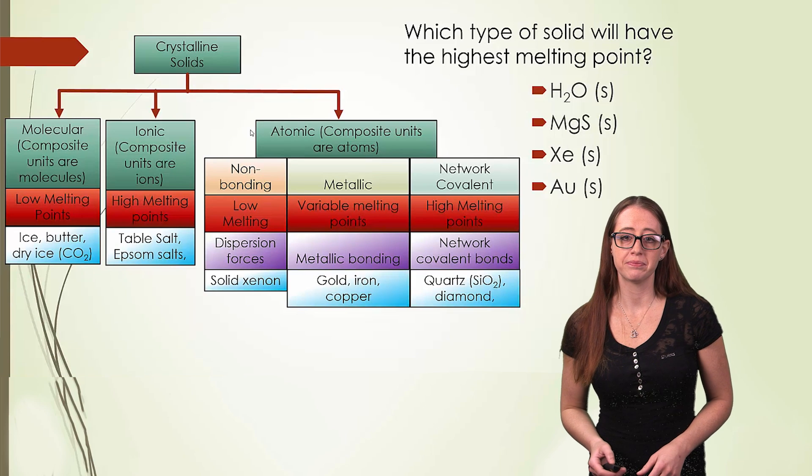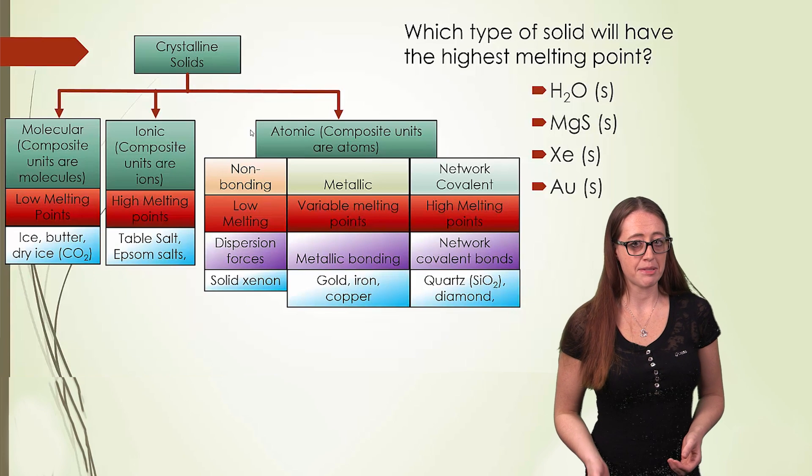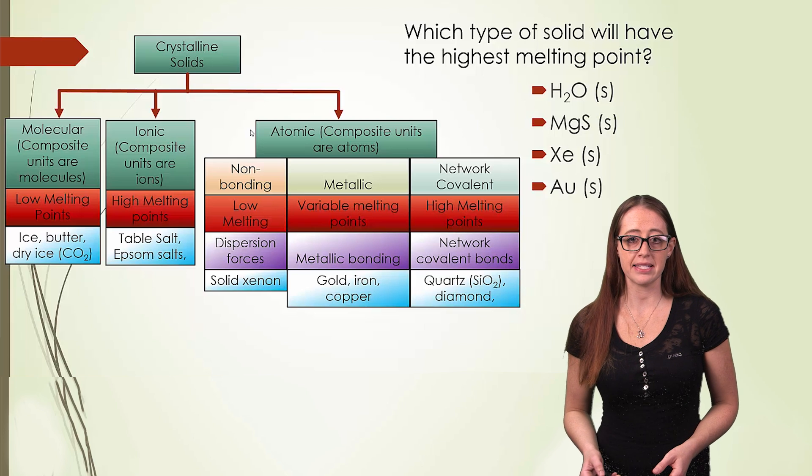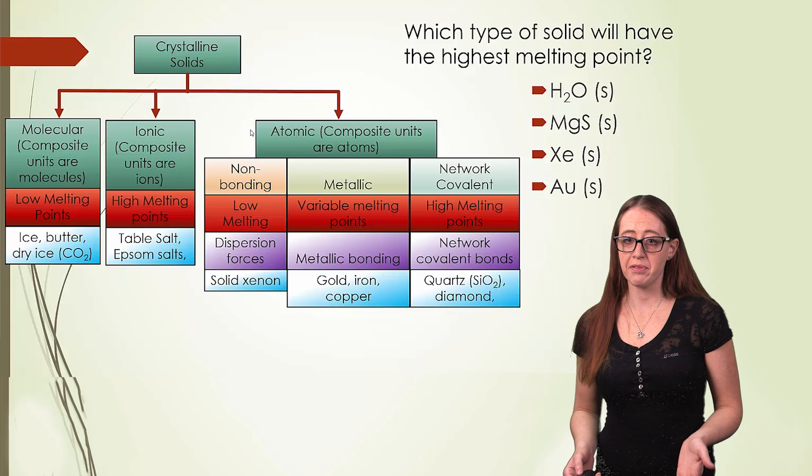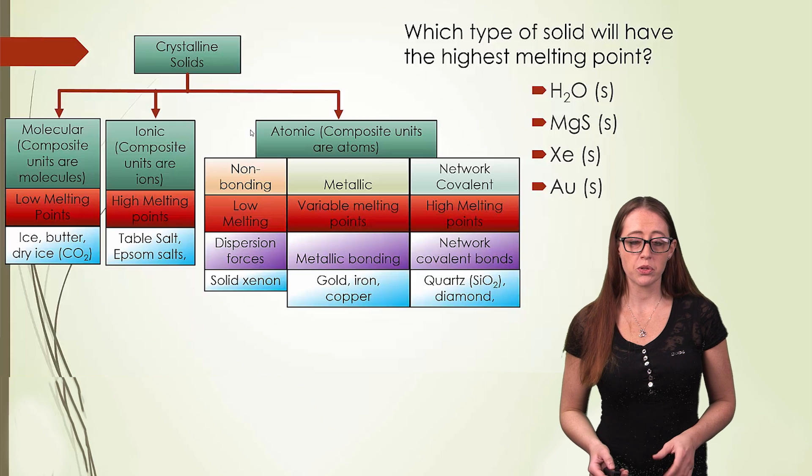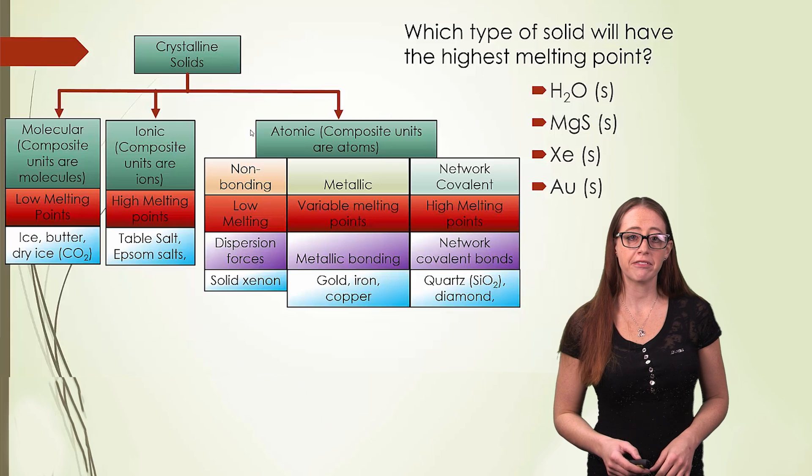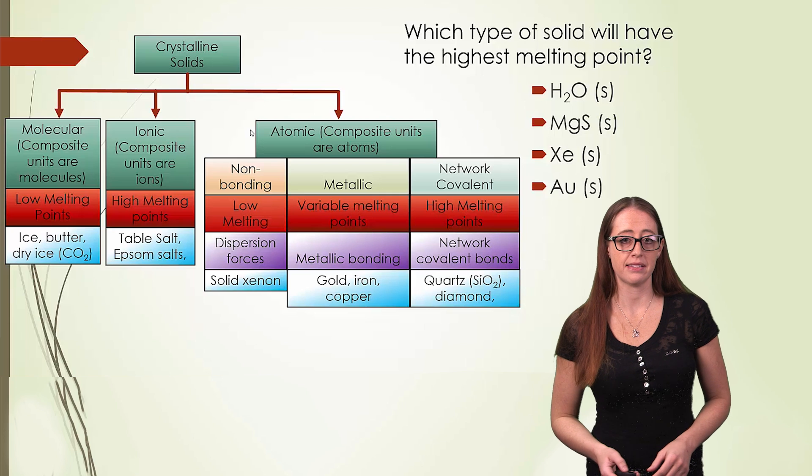So let's do an example. Compare the given species that I have here, and decide which has the highest melting temperature. We want to identify the type of solid for each one. So take a minute before moving on, and for each solid, identify which type of solid it is.